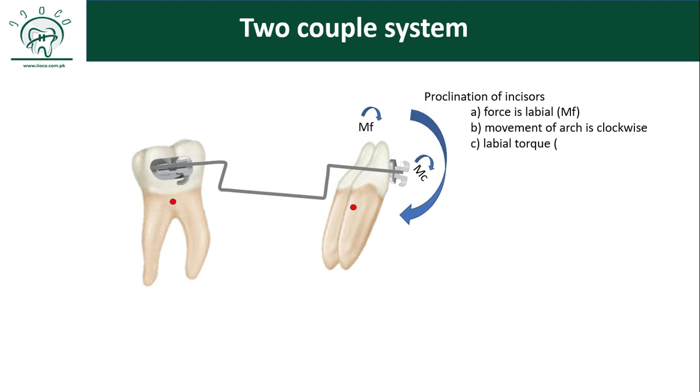There is also labial crown torque because of the couple in the brackets. This is according to William Prophet in Contemporary Orthodontics.